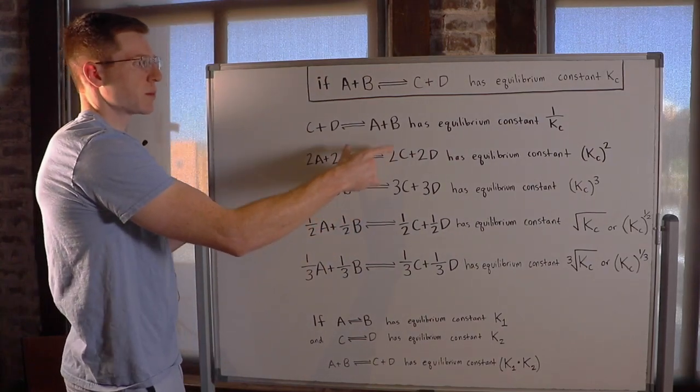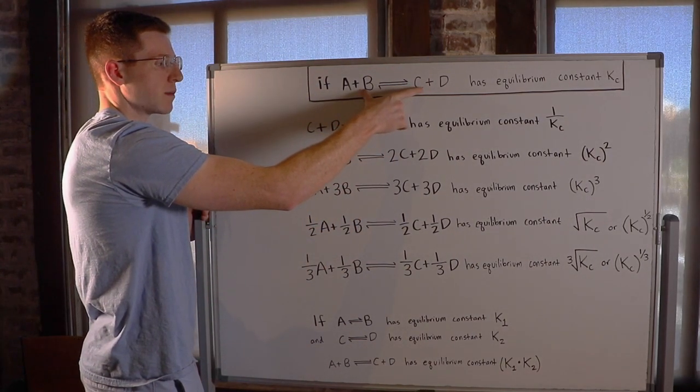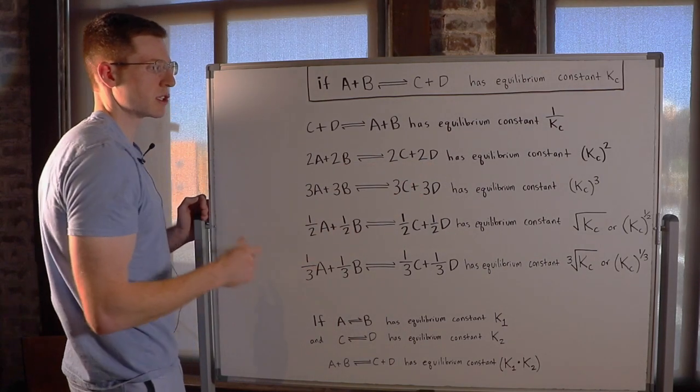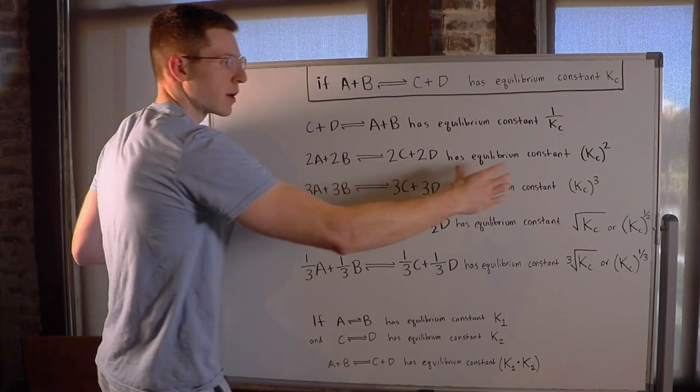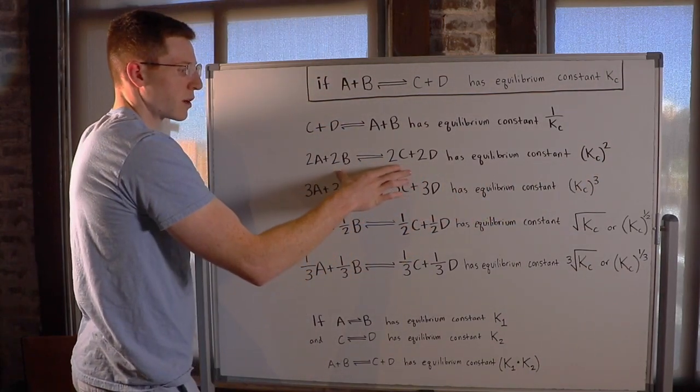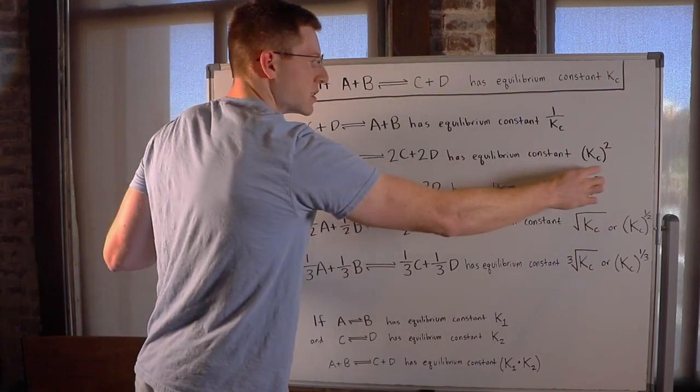What happens if we simply multiplied all of these stoichiometric coefficients by 2? So now it's 2A plus 2B in equilibrium with 2C plus 2D. Well, now the equilibrium constant gets squared. So it was KC, but if we multiply all the coefficients by 2, it becomes KC squared.